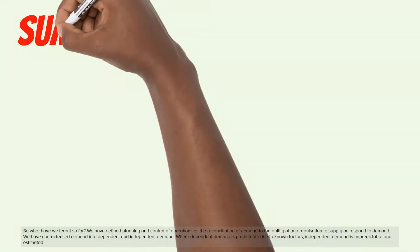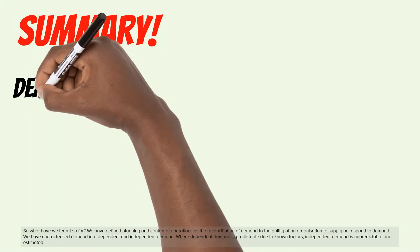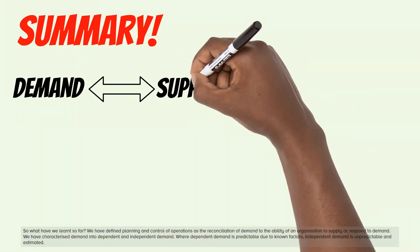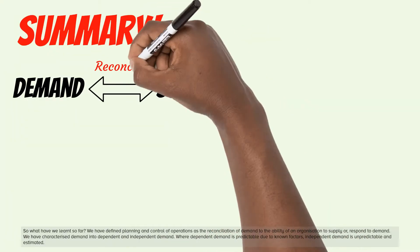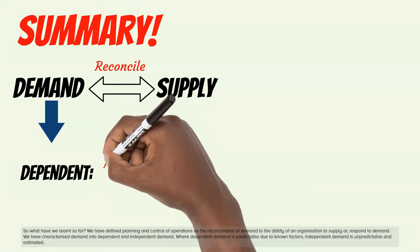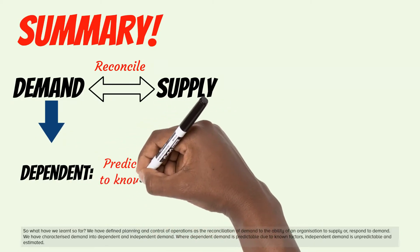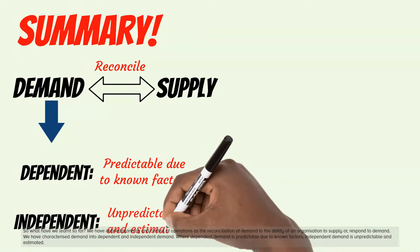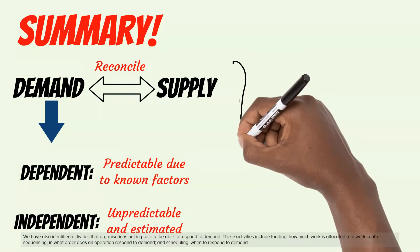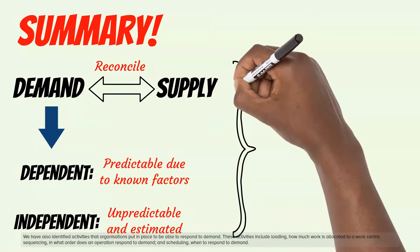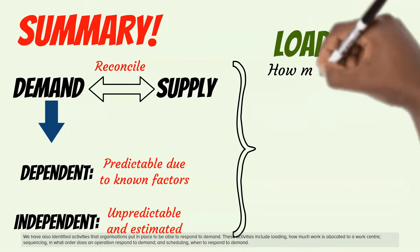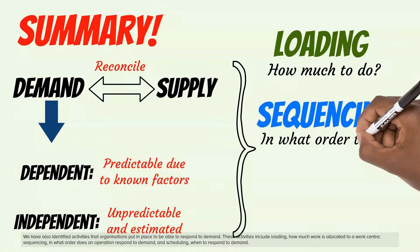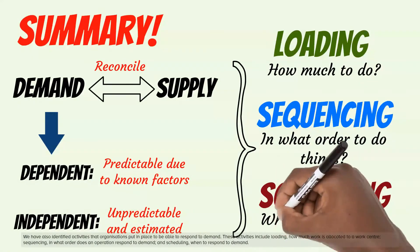So what have we learned so far? We have defined planning and control of operations as the reconciliation of demand to the ability of an organization to supply or respond to demand. We have characterized demand into dependent and independent demand, where dependent demand is predictable due to known factors, and independent demand is unpredictable and estimated. We have also identified activities that organizations put in place to respond to demand: loading — how much work is allocated to a work center; sequencing — in what order does an operation respond to demand; and scheduling — when to respond to demand.